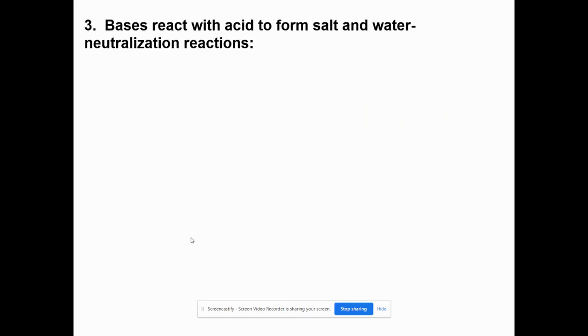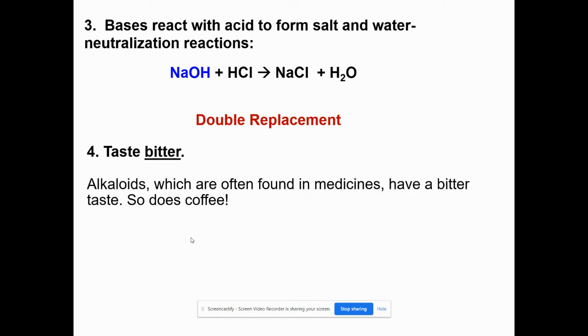So they react with acid to form salt and water. That's a neutralization reaction. So look at the OH. That's Arrhenius base. And look at the H in hydrochloric acid. HCl is an Arrhenius acid. And then it's a double replacement reaction. So it's an acid base reaction, but you would not get it wrong if you called it a double replacement reaction.